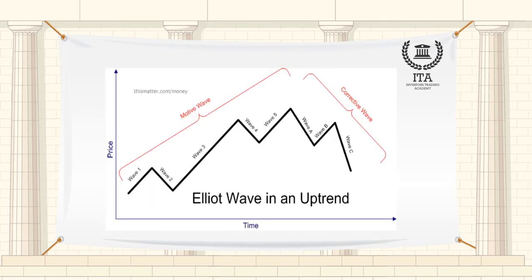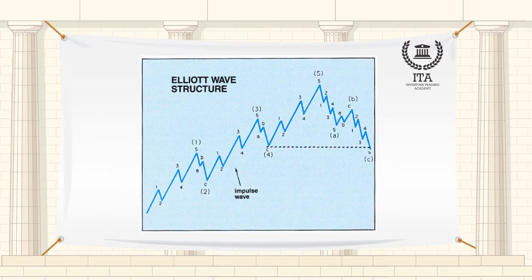Elliott discovered that the ever-changing path of stock market prices reveals a structural design that in turn reflects the basic harmony found in nature. From this discovery, he developed a rational system of market analysis.